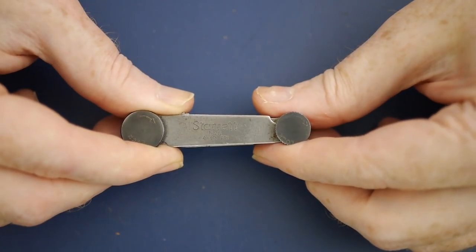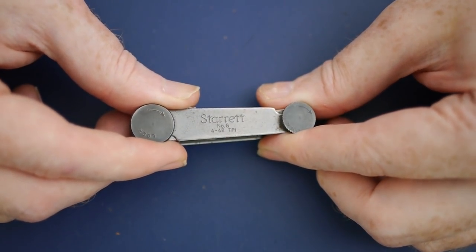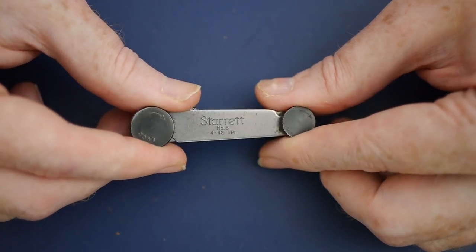Next is an imperial thread gauge from Starrett. This is a good quality tool in great condition that will be really useful for my volunteer work.